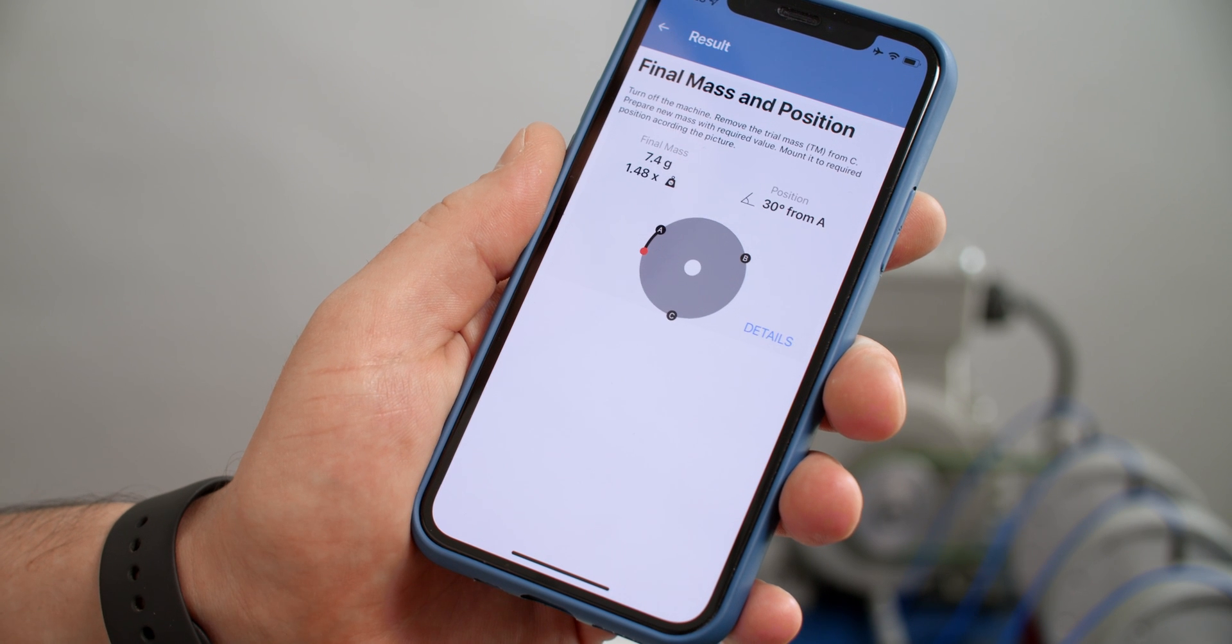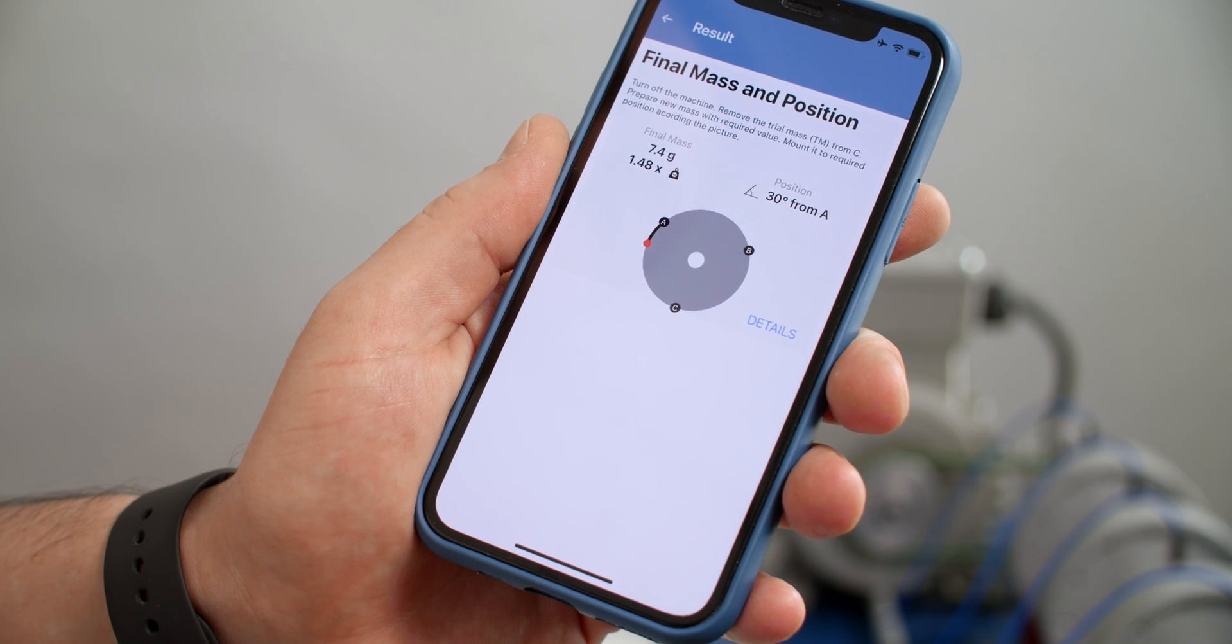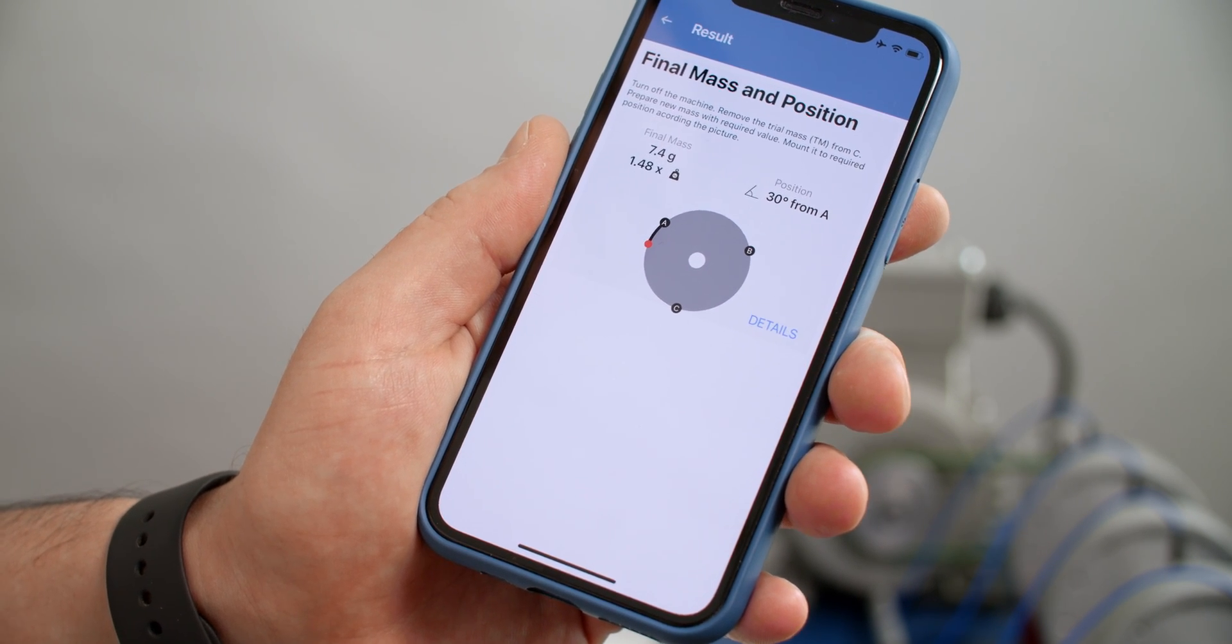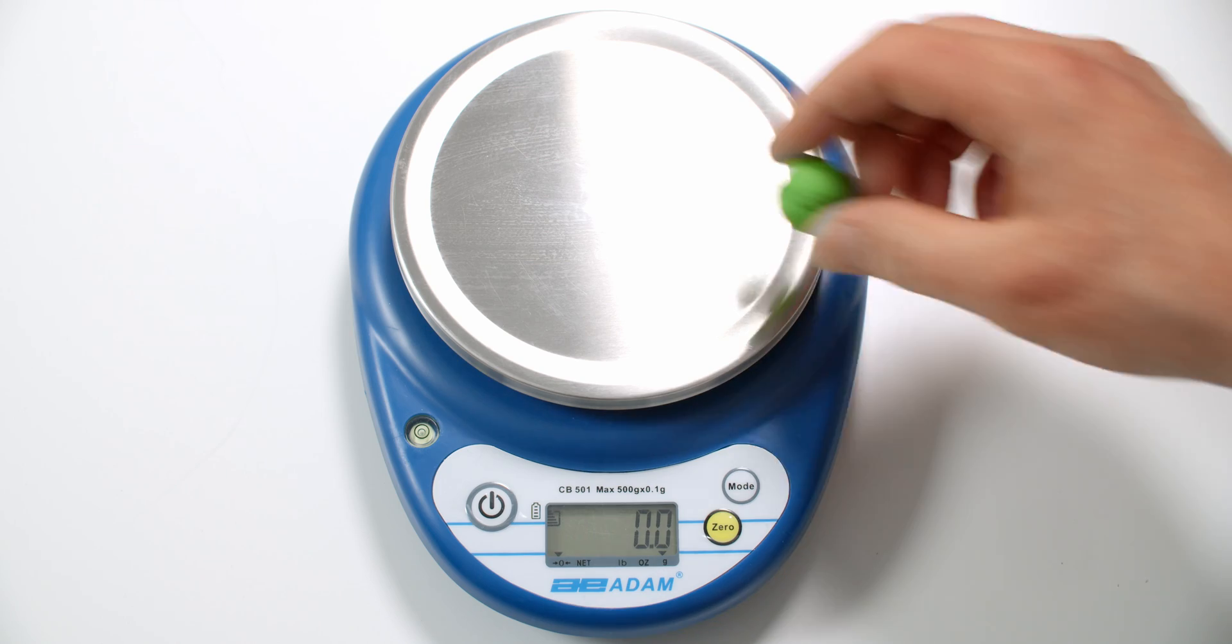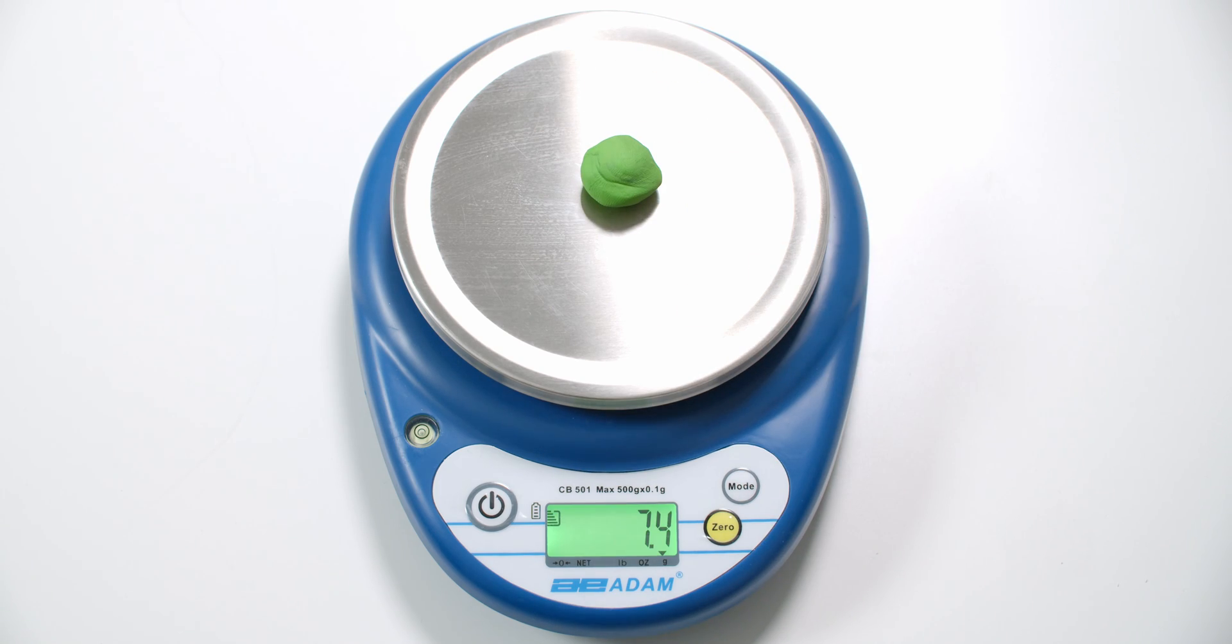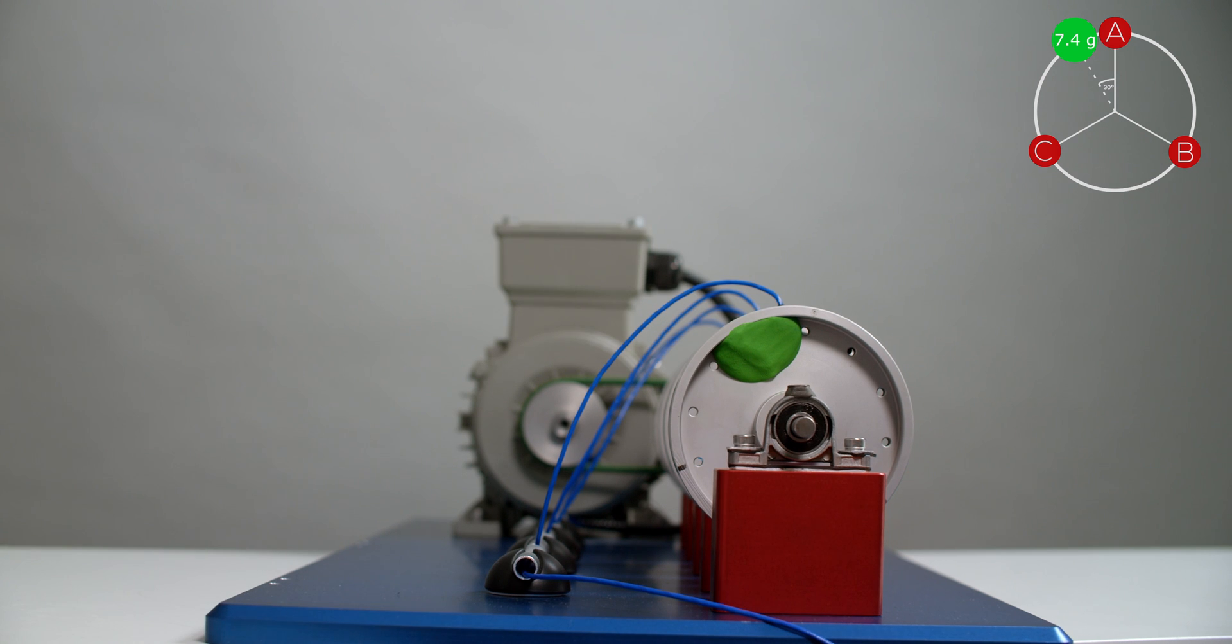The app will calculate and advise how much the final balancing mass should weight and where should I place it. In this case I should add 7.4 grams into 30 degrees from A position.